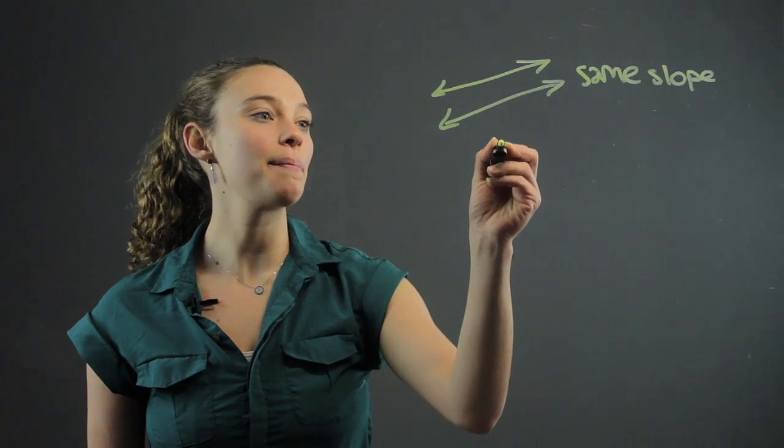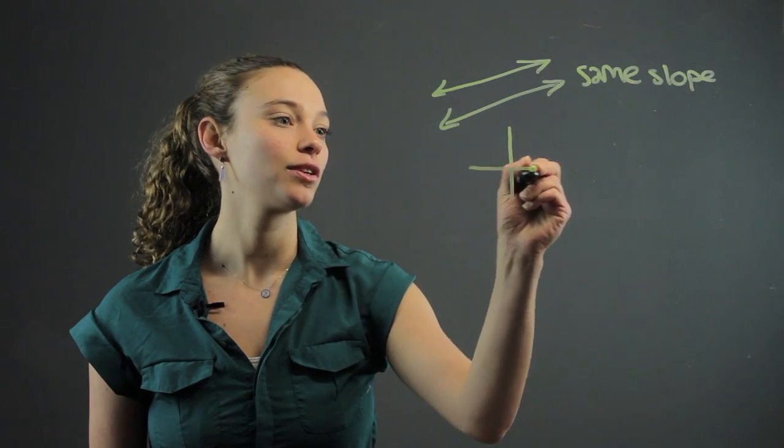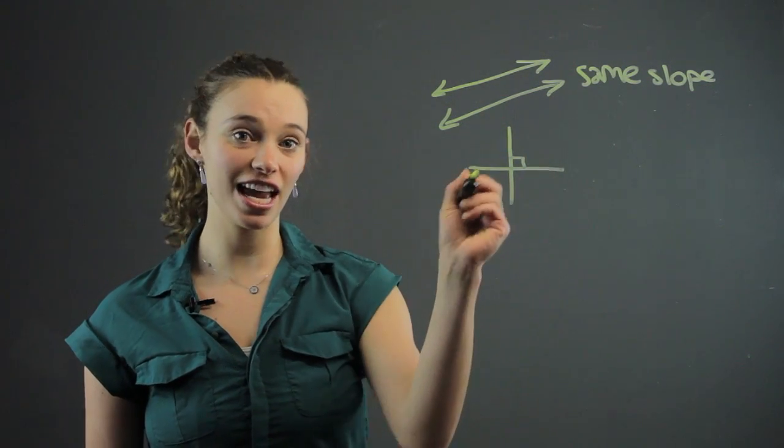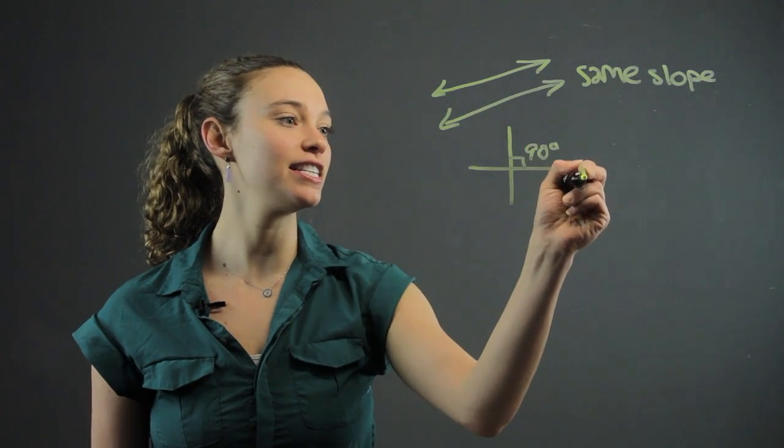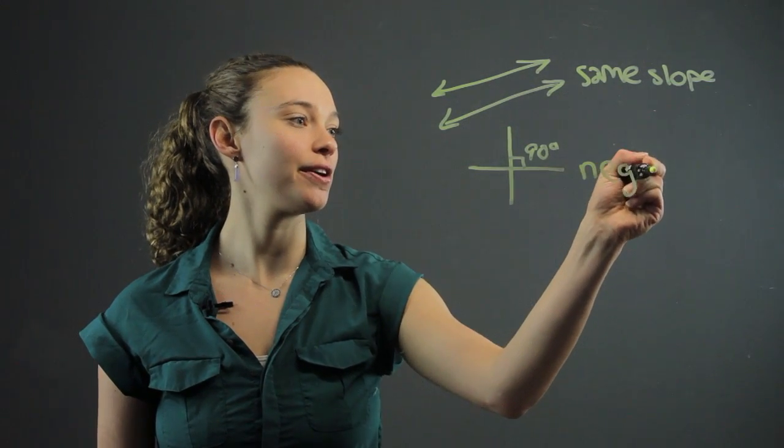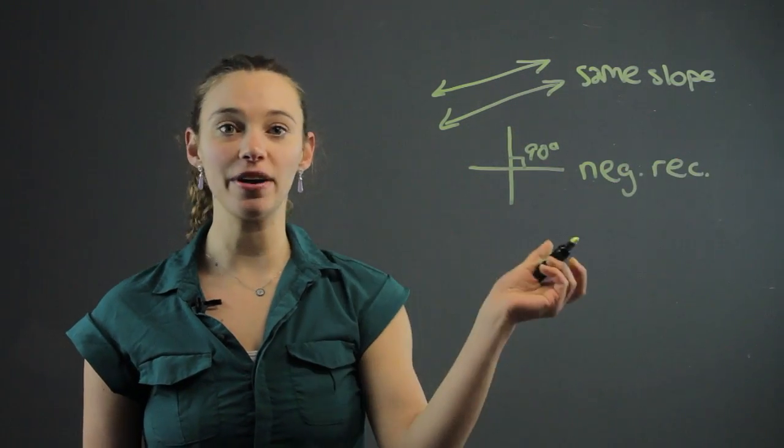There's also perpendicular lines which form a 90 degree angle and their slope is the negative reciprocal if you're going to graphing.